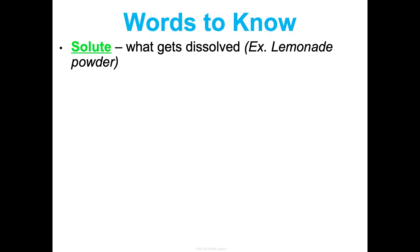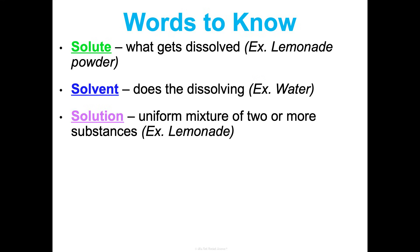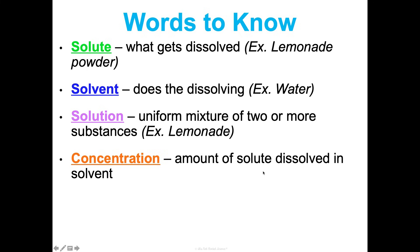A couple of words to know: a solute is what gets dissolved, the solvent does the dissolving, and the solution is a uniform mixture of the two. Think of lemonade powder as the solute, water as the solvent, and lemonade as the solution. Concentration is the amount of solute dissolved in solvent. High concentration means a ton of solute — like super strong sour lemonade. Low concentration would be low solute — like really watery lemonade where your ice melted hours ago.